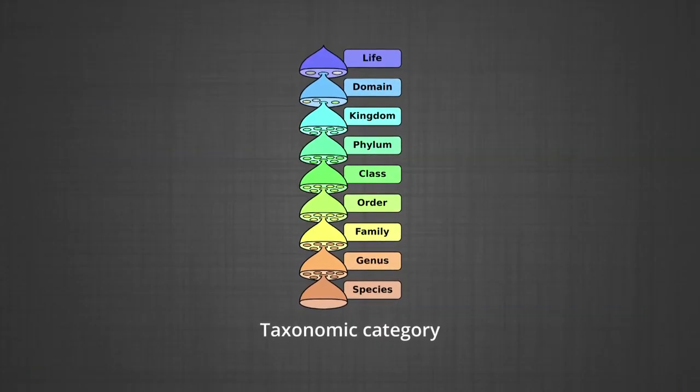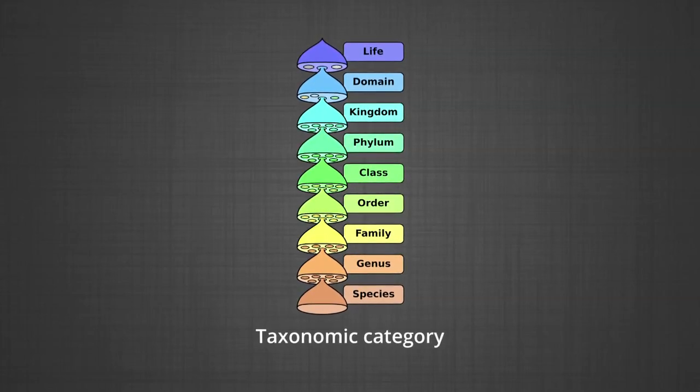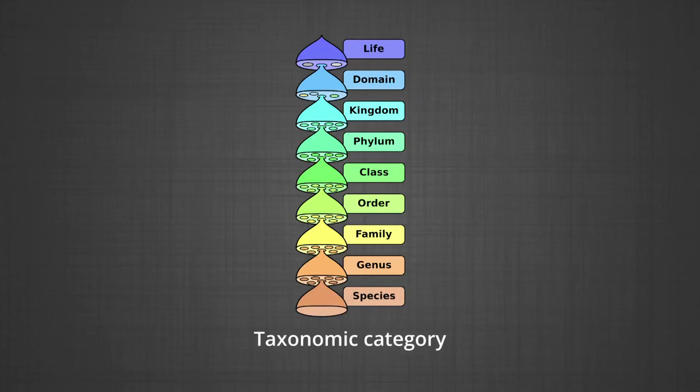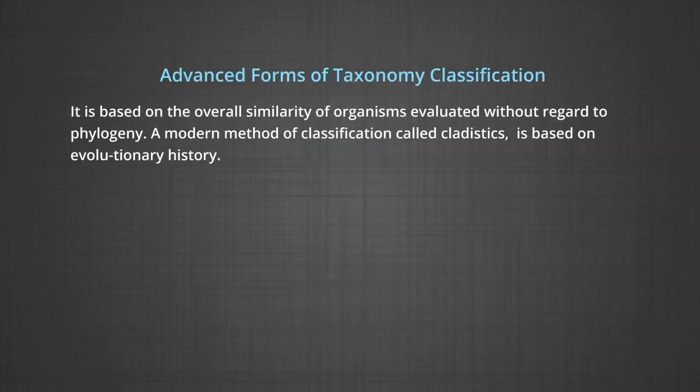Classification is not a single-step process but involves a hierarchy of steps in which each step represents a rank or category. Since the category is part of the overall taxonomic arrangement, it is called a taxonomic category, and all categories together constitute the taxonomic hierarchy. Each category is referred to as a unit of classification and represents a rank commonly known as a taxon. Advanced forms of taxonomy include phonetic classification, which is based on overall similarities of organisms evaluated without regard to phylogeny. The modern method of classification called cladistics is based on evolutionary history, arranging organisms on the basis of their shared, similar, or derived characters that differ from ancestral characters, producing a phylogenetic tree called a cladogram.